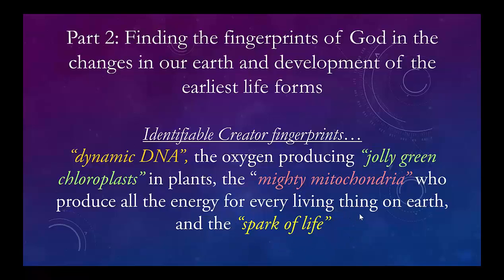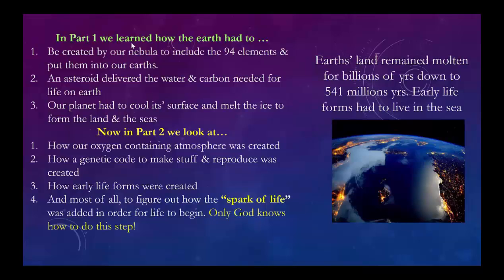In part one, we learned how the Earth had to be created by our nebula to include the 94 essential elements and put them in our Earth specifically. We learned that an asteroid delivered the extra water and carbon needed for life on Earth. We know that the planet had to cool its surface and melt the ice to form the land and the seas.